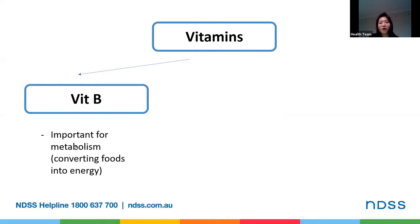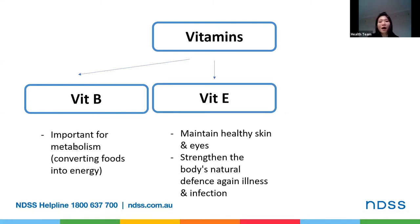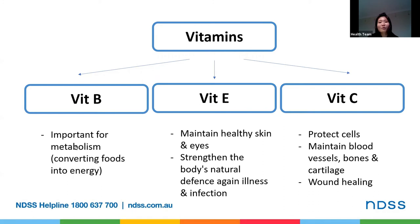Another important nutrient found in carbohydrate-rich foods are your vitamins. They can provide us with B vitamins, which are important for our metabolism — helping your body break down food and converting it to energy. Carbohydrates also provide vitamin E, which helps maintain healthy skin and eyes and strengthens the body's natural defense against illness and infection. It also provides vitamin C, which helps protect cells, maintain blood vessels, bones and cartilage, as well as wound healing.